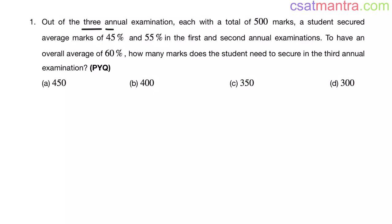Out of the three annual examinations, each with a total of 500 marks, a student secured average marks of 45% and 55% in the first and second annual examinations. To have an overall average of 60%, how many marks does the student need to secure in the third annual examination?